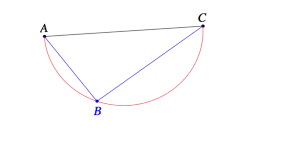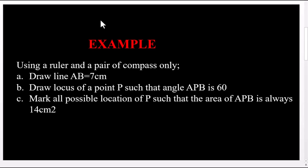As you move from the circumference towards the center, the angle becomes greater than 90 degrees. As you move from the circumference away from the center, the angle becomes less than 90 degrees.